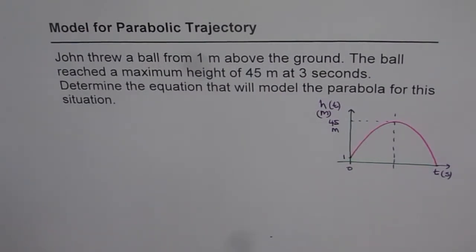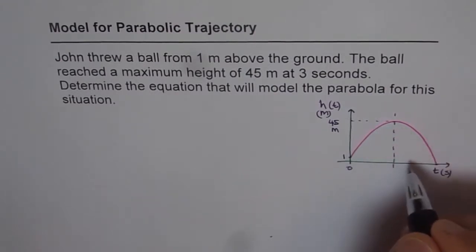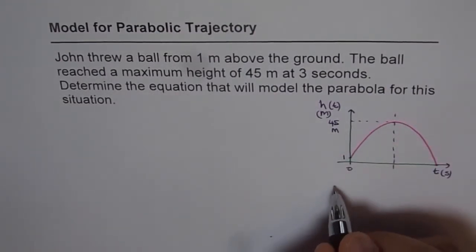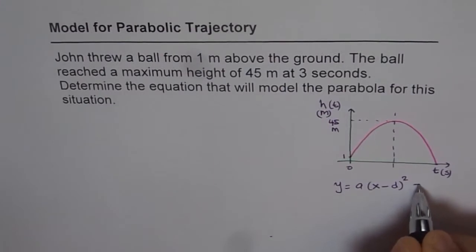Now from these conditions given to us we should be in a position to find equation of this parabolic path. Now since we are given the turning point, the maximum or the vertex, vertex form is the best thing to use. So we will use the vertex form which is y equals a times (x minus d) squared plus c.